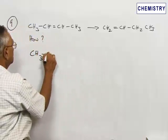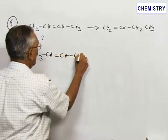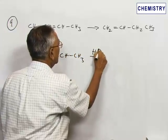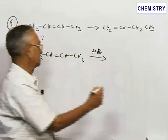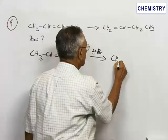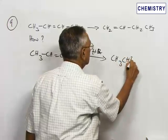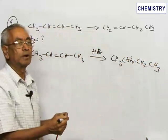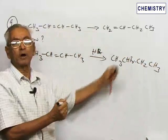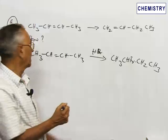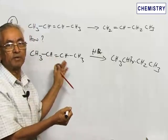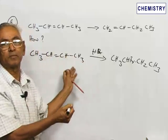React 2-butene with HBr. When it is treated with HBr or any other hydrogen halide, preferably HBr, it will give rise to CH3-CHBr-CH2-CH3. You will get simple direct Markovnikov addition, and this is actually a symmetrical olefin, therefore no need of even applying Markovnikov's rule.